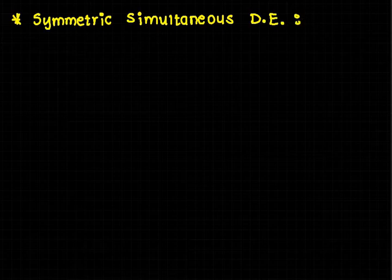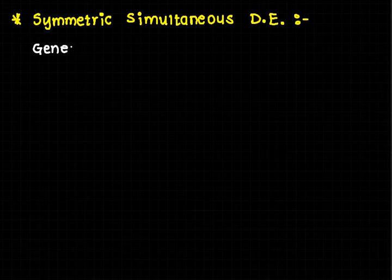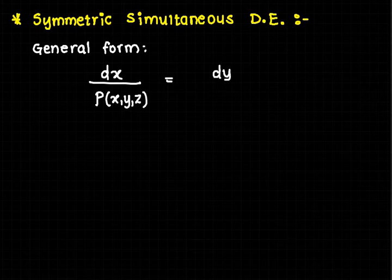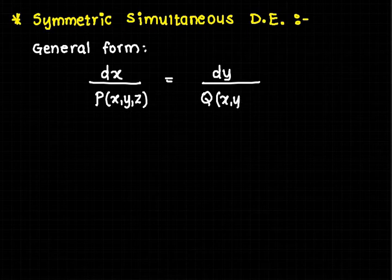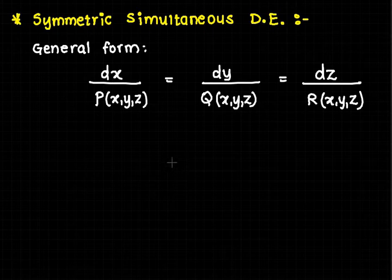A symmetric simultaneous differential equation is a system of differential equations which is symmetric in nature. The general form is: dx/P = dy/Q = dz/R, where P, Q, and R are functions of x, y, z, which are the dependent variables depending on some independent variable t.